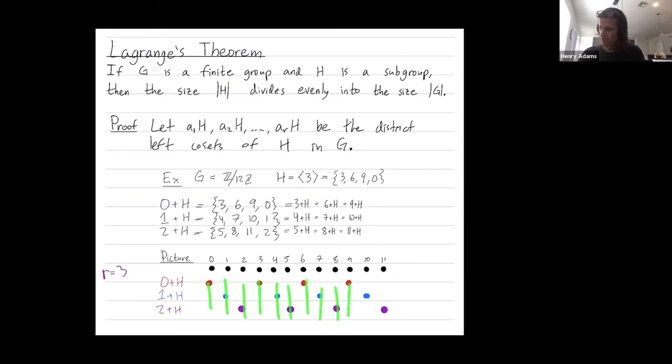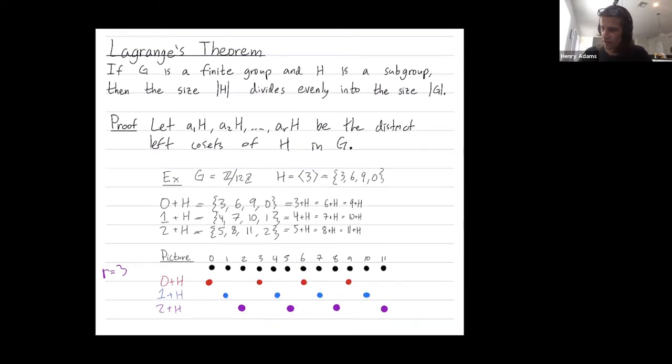And finally, we're going to observe that they all have the same size. So therefore, the size of this coset, which is the size of the subgroup, divides evenly into the size of the larger group.